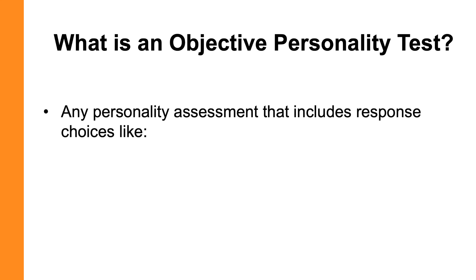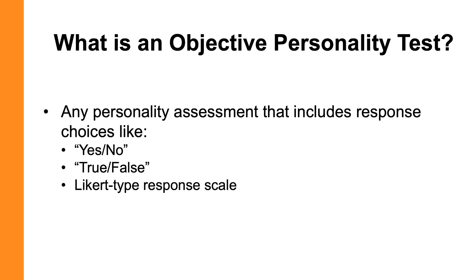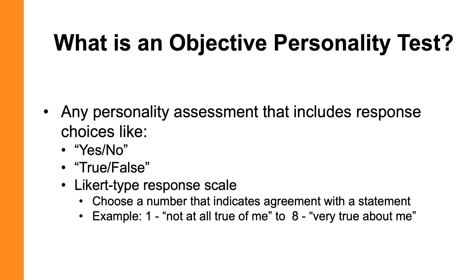So let's talk about the definition — what makes a personality test an objective test? If you have a test and it asks you a question and your response choices are yes or no, true or false, or some sort of Likert-type response where you indicate a number showing how much you agree with a statement — either about yourself in a self-report or about someone else in an informant report — with a scale from zero or one (not at all true) to seven or eight (very true), those are all indications that you are looking at an objective personality test.